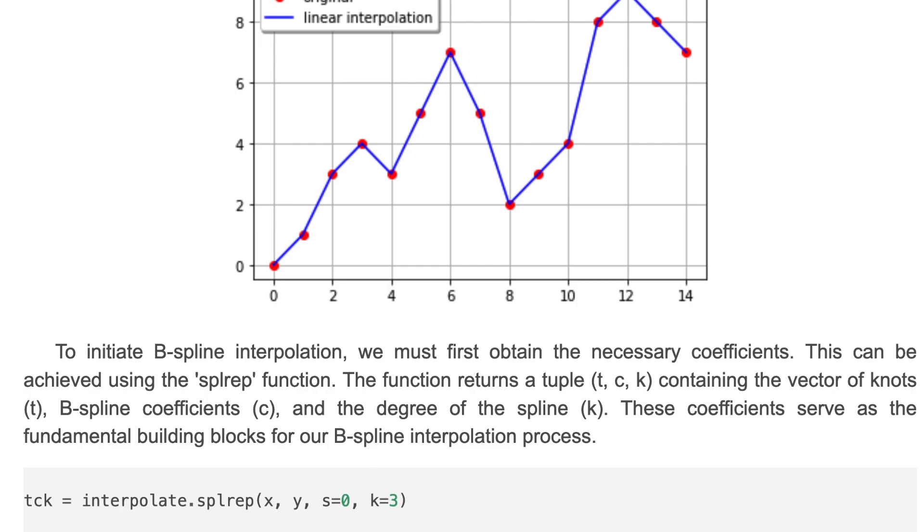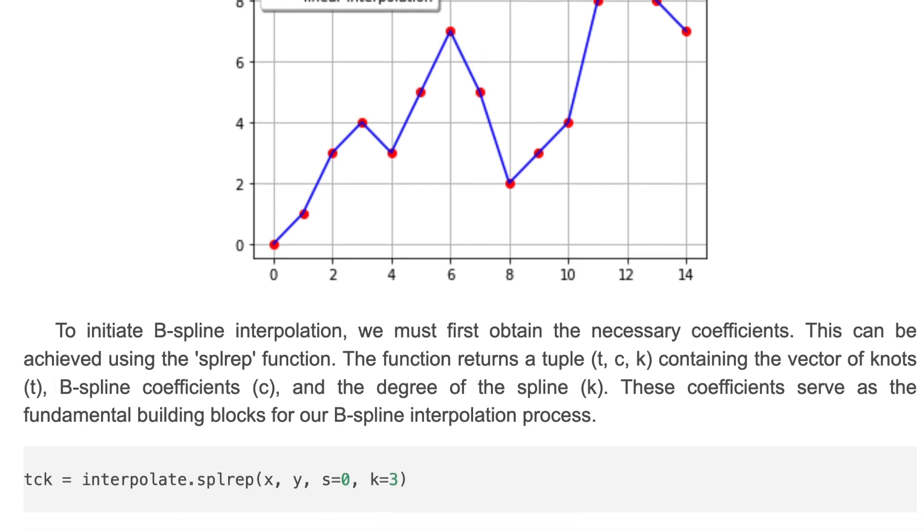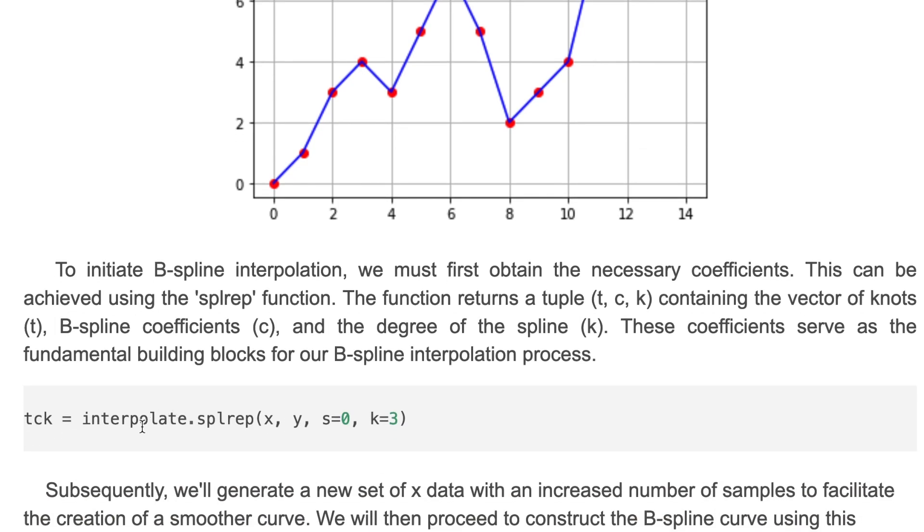To initiate B-spline interpolation, we must first obtain the necessary coefficients. This can be achieved by using the splrep function. The function returns a tuple that contains the vector of nodes, B-spline coefficients, and degree of the spline. These coefficients serve as the fundamental building blocks for our B-spline interpolation process. Here we can get those tuple values.